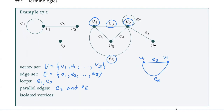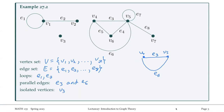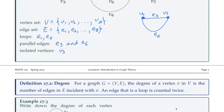Then isolated vertices — this is kind of what it sounds like. It's a vertex that doesn't have any edges; it's not connected to any other vertices. So V3 has no edges, so V3 is isolated. The terminologies here are fairly intuitive, so they shouldn't be too difficult to remember.